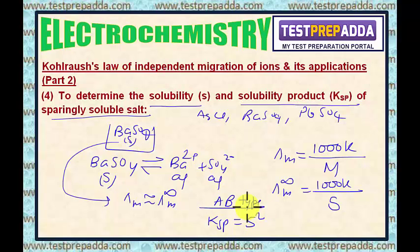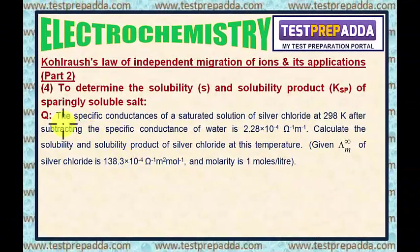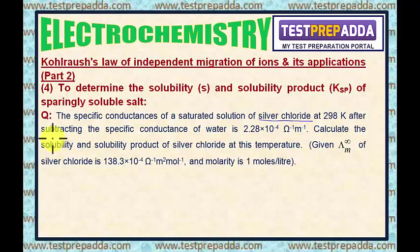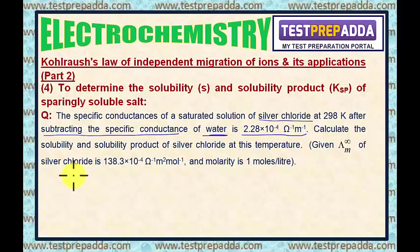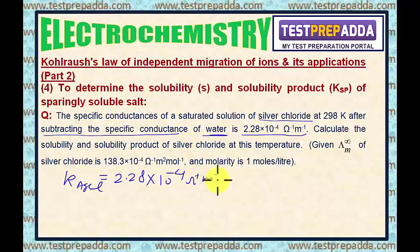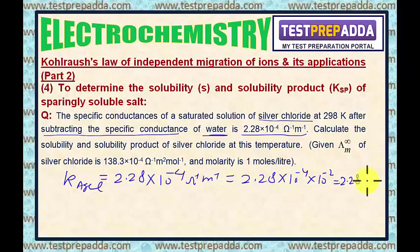Now I will take a question to understand this application. The question says: the specific conductance of a saturated solution of silver chloride (a sparingly soluble salt) at 298 Kelvin, after subtracting the specific conductance of water, is 2.28 × 10⁻⁴ Ohm⁻¹ m⁻¹. This is K of pure AgCl. Converting to Ohm⁻¹ cm⁻¹ by multiplying by 10⁻², it becomes 2.28 × 10⁻⁶ Ohm⁻¹ cm⁻¹.